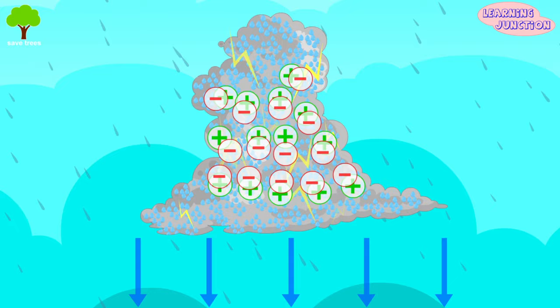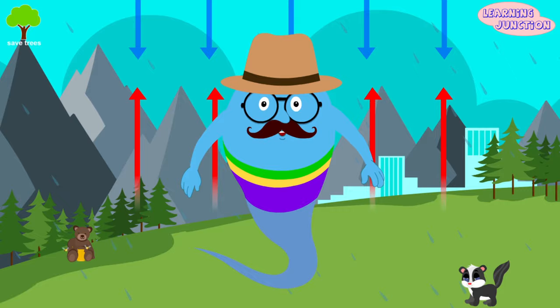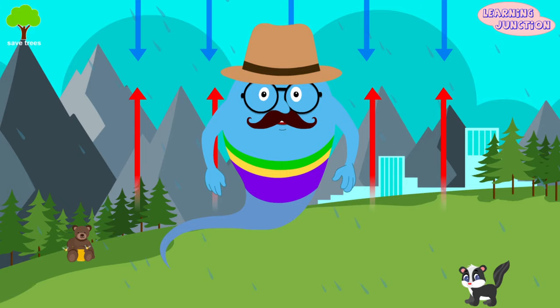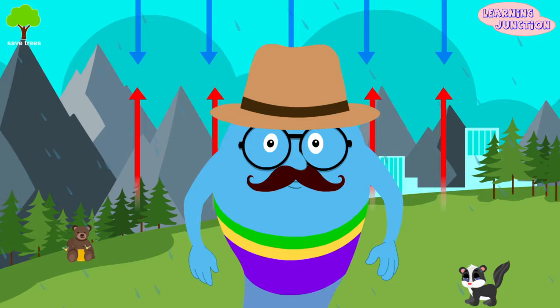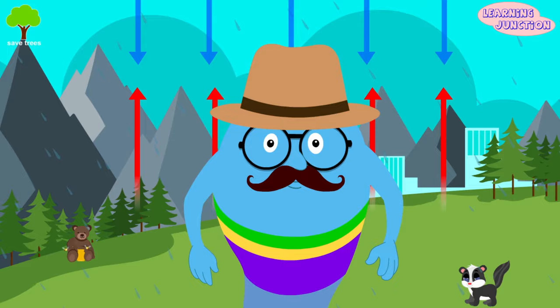Since opposites attract, that causes a positive charge to build up on the ground below the cloud. The ground's electrical charge concentrates around anything that sticks up, such as people, animals, mountains, buildings, or trees. The charge coming up from these points eventually connects with a charge reaching down from the clouds, and thus lightning strikes.